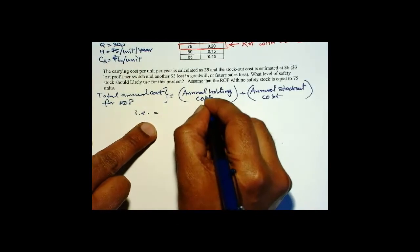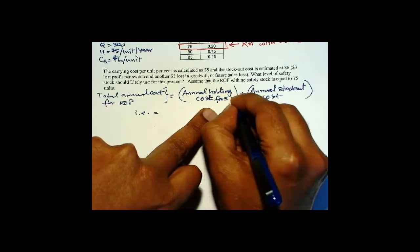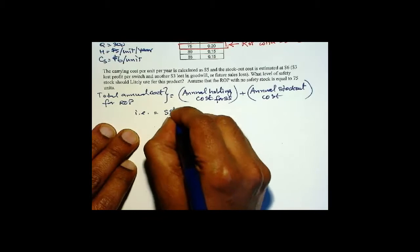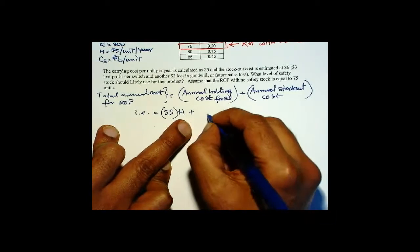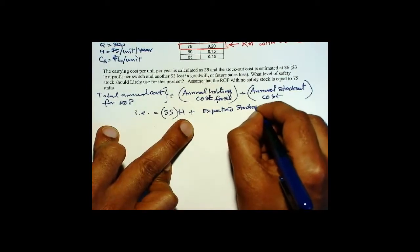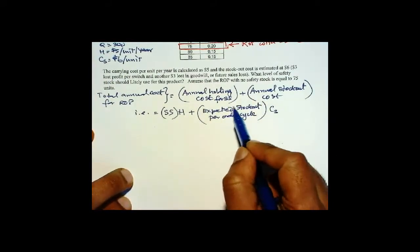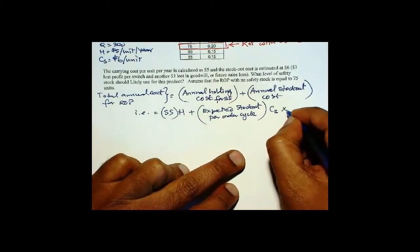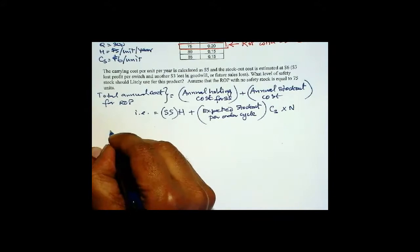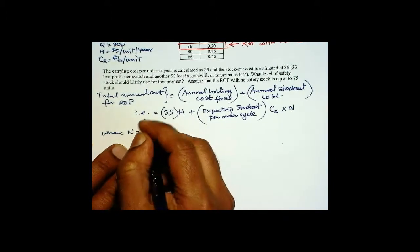The annual holding cost is for safety stock, so that will be safety stock times H. Plus, we need to compute the expected stock out per order cycle, times C sub S, the cost of stock out per unit. This gives the stock out cost for one order cycle, and we multiply that by N.